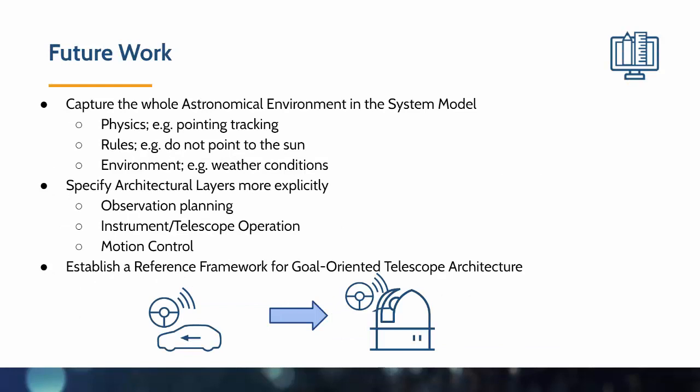For future work, we want to capture the whole astronomical environment in the system model, including the physics, the rules, and the environment. We also want to specify the architectural layers more explicitly, such as observation planning, instrument operation, telescope operation, and motion control. Overall, we want to establish a reference framework for goal-oriented telescope architecture, similar to the frameworks which exist for autonomous car control. Thank you very much.